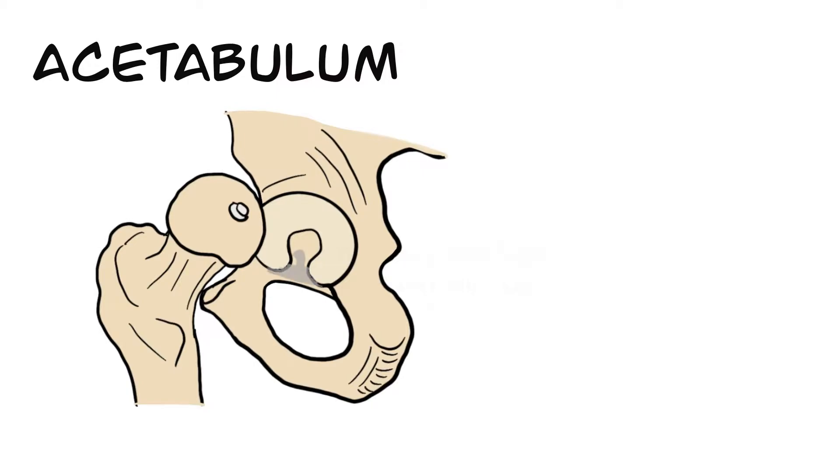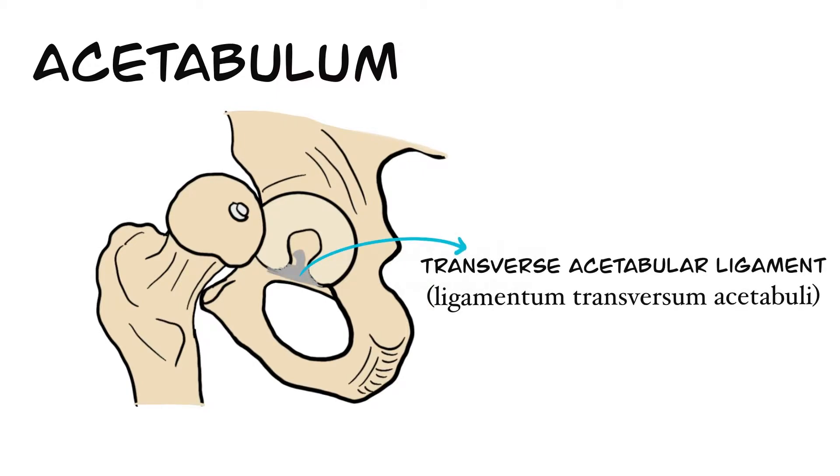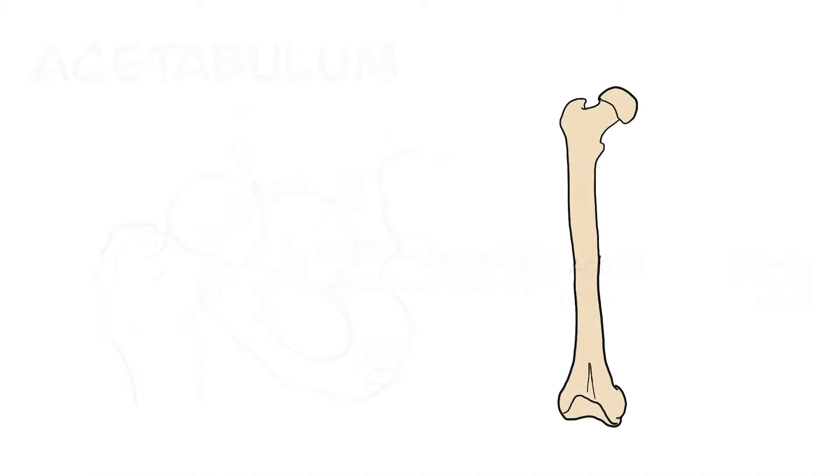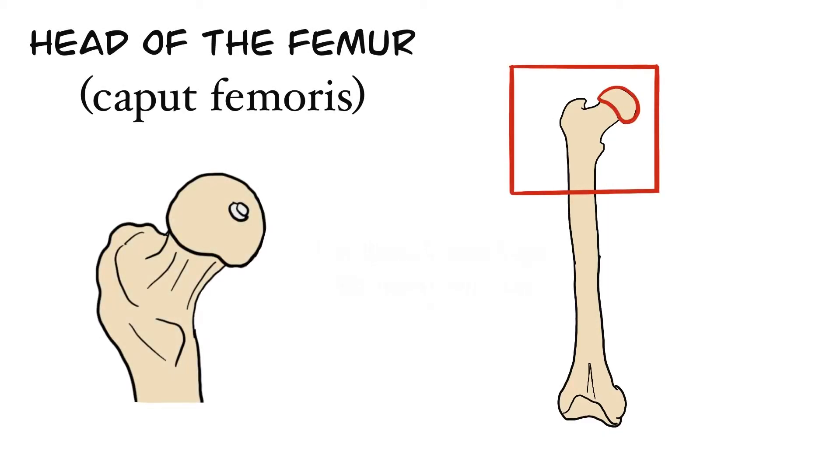Acetabular notch is bridged by the transverse acetabular ligament. Transverse acetabular ligament is also known in Latin as ligamentum transversum acetabuli. Femoral head, caput femoris, is like a ball located superomedially and anteriorly at acetabular fossa.